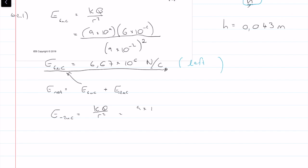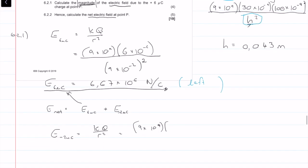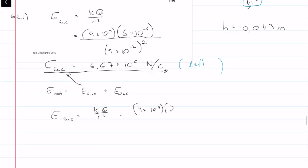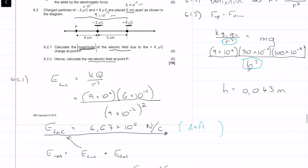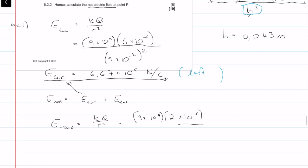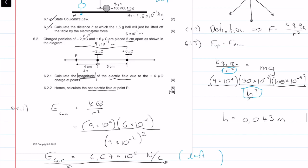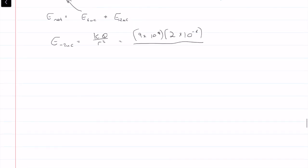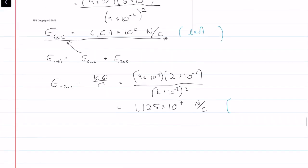Which is going to be equal to KQ over R squared, is equal to 9 times 10 to the 9. Again, I'm going to use magnitudes here, so it's 2 times 10 to the minus 6 over our radial distance which is 4 times 10 to the minus 2, and all of that's squared. Then if we calculate that, we get a value of 1.125 times 10 to the 7 newtons per coulomb.